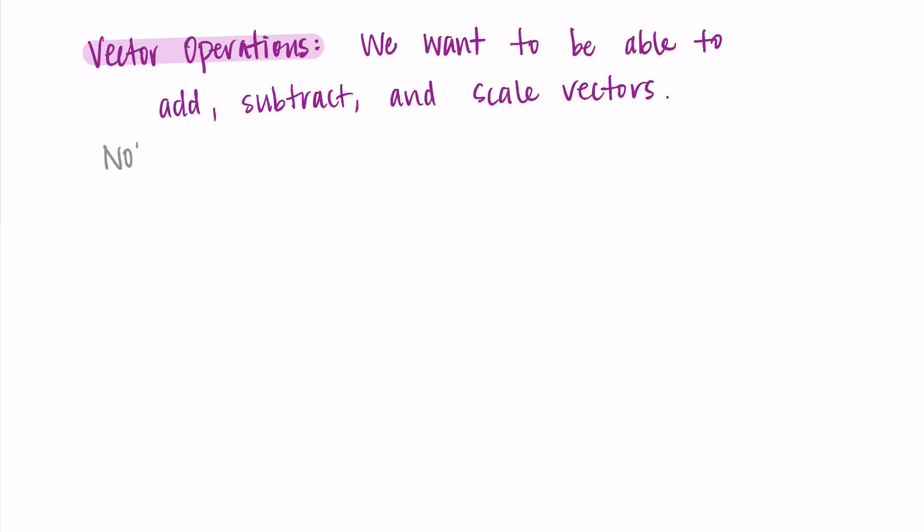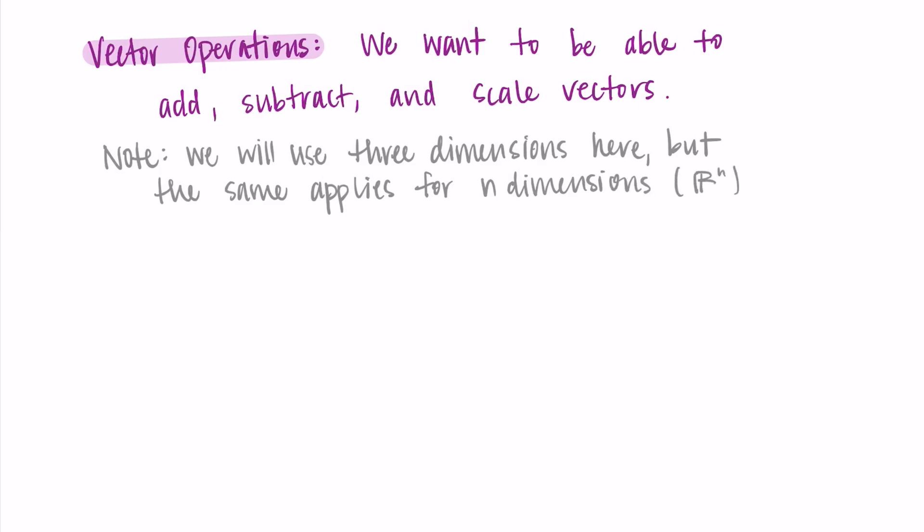So, as a note before I get going, we are going to use three dimensions here in this video, but the same rules apply for n-dimensional vectors, so things in R^n. We're going to do R^3, and it'll be pretty easy to see how these translate to R^2. You just do one fewer component, so just the x and the y. But I just want to mention that all of these things extend to n-dimensional systems.